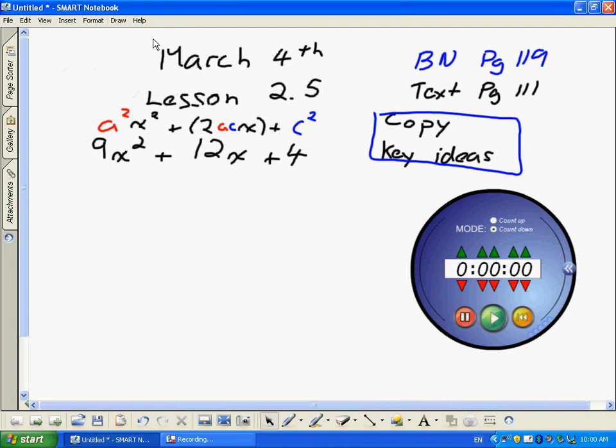March fourth, on lesson 2.5. We've done pretty much every type of factoring. The only type we have left is special cases. We're going to go over technically only really two of them, but one of them is a variation. So we'll say three different types of special cases.